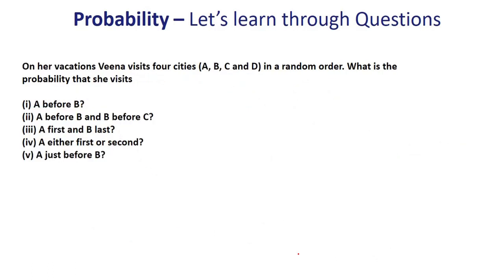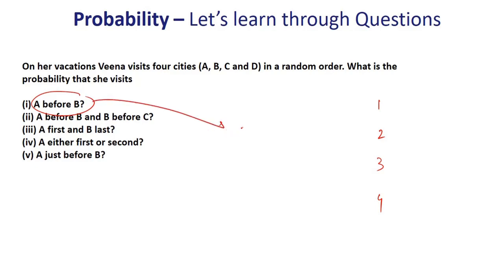Veena visits four cities A, B, C, D in a random order. What is the probability she visits A before B? Common sense: half the time A will be before B and half the time B before A. Therefore, probability of A before B is 1/2 — without even calculating favorable and total events.